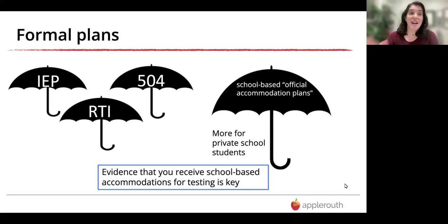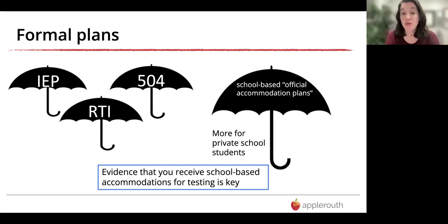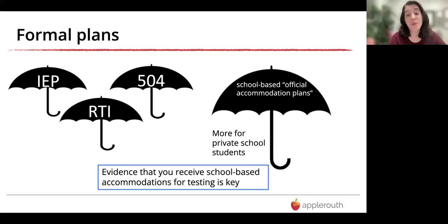Once you have a diagnosis, there are formal plans. A 504 plan is developed for students who have a disability that does not require special education services — for a student who is mainstreamed and just needs, say, extended time on tests. An IEP, or Individual Education Plan, provides a program of specialized instruction and supports to access and progress in the curriculum, which might involve being removed from the classroom to work with a special ed teacher. If you're in a private school, IEPs and 504s don't apply — you'll probably get an official accommodation plan from your school.